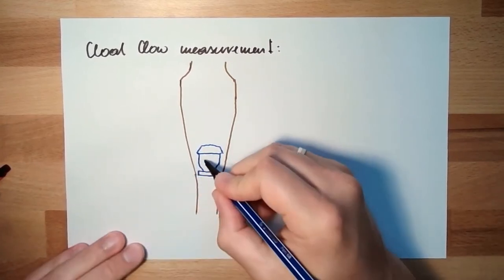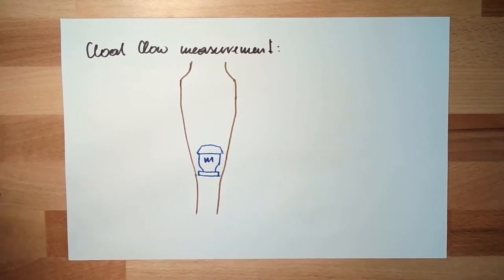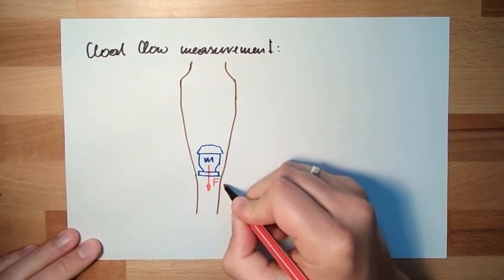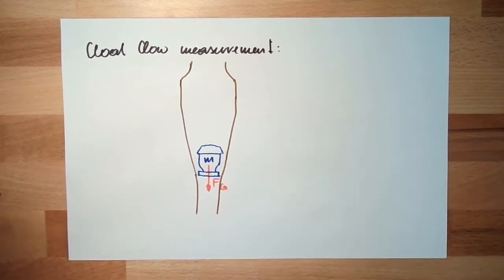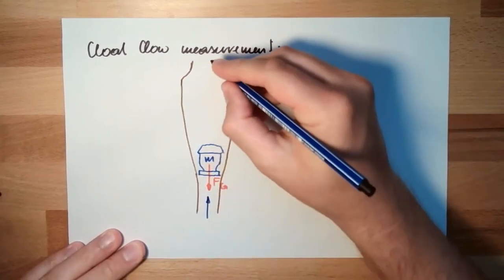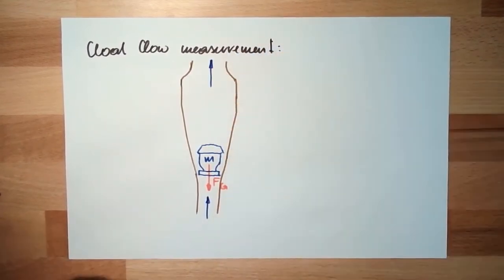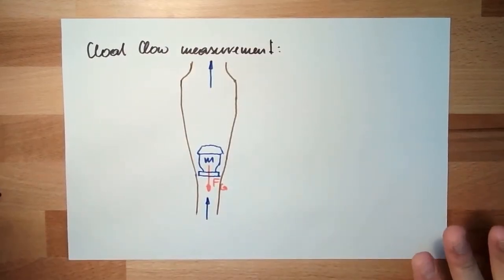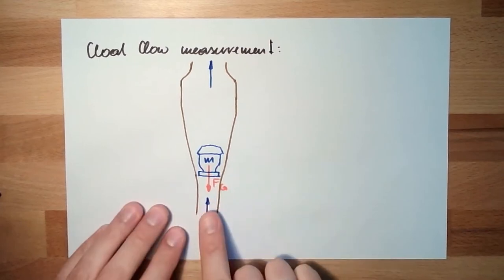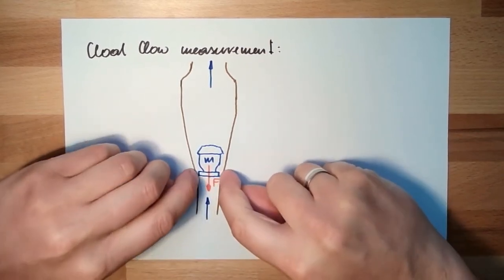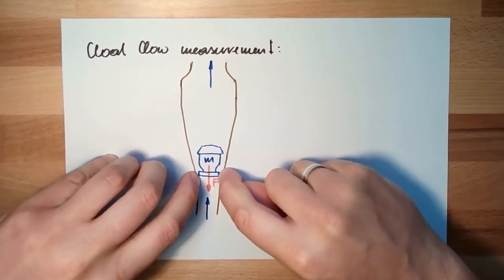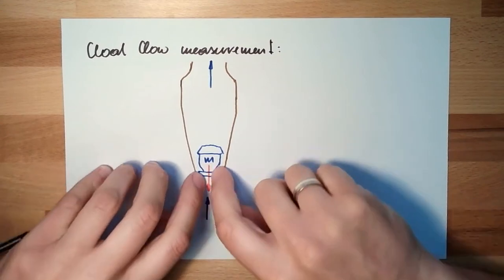This mass means it will be pulled down by the gravity force Fg. If now the liquid starts to flow, then there is a force also from the liquid because it has to pass this float. There is friction and so on.